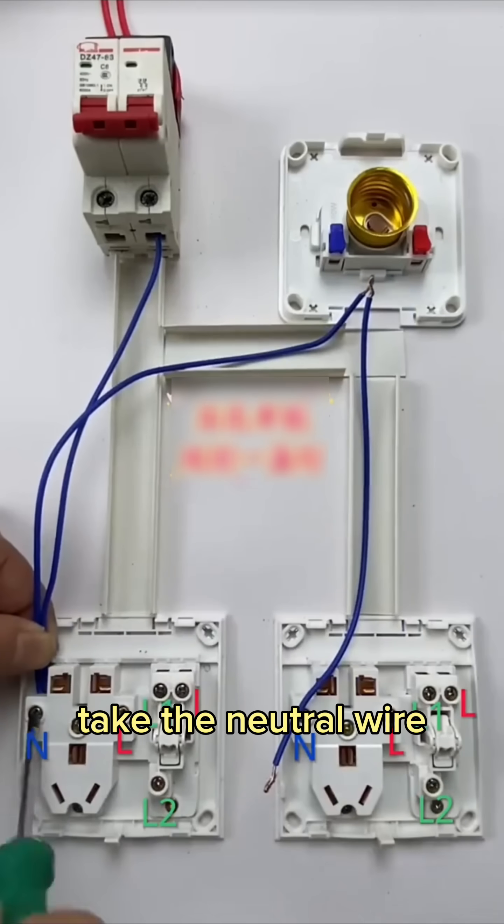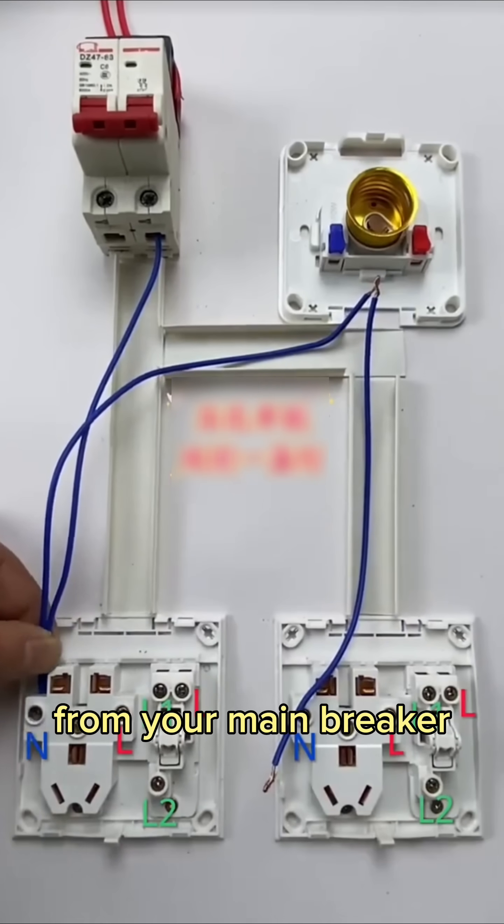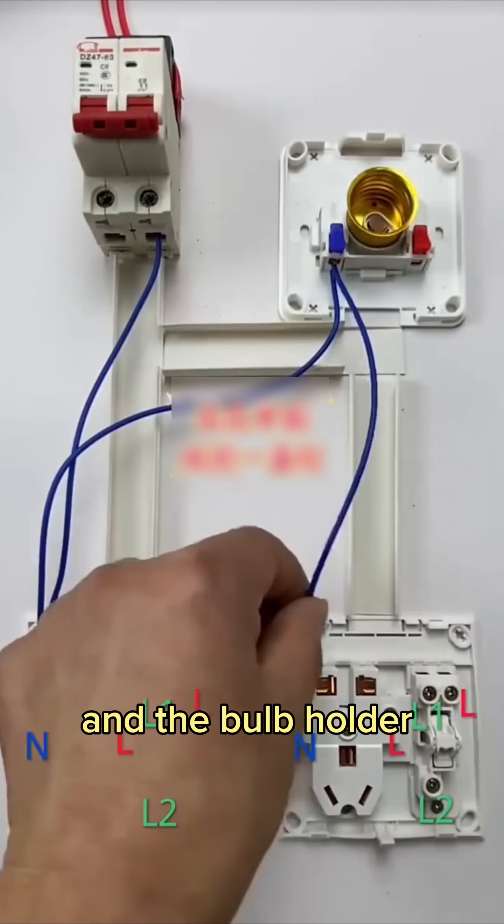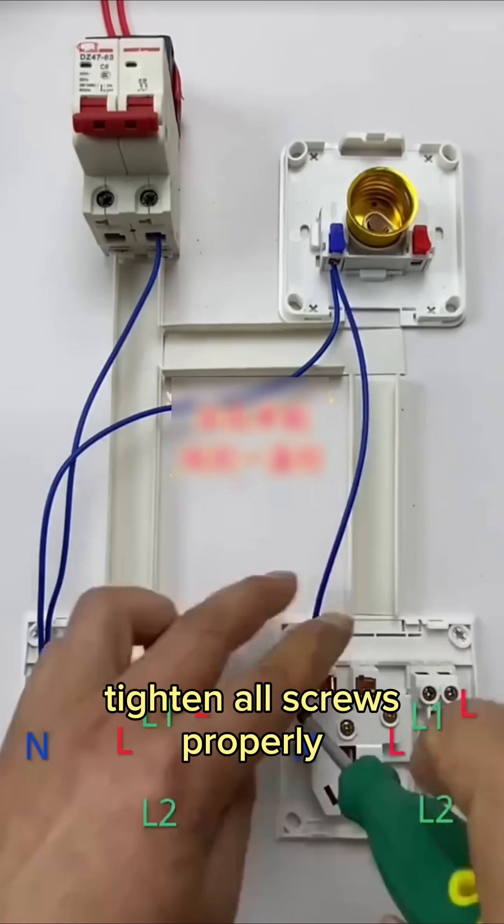First, take the neutral wire from your main breaker and connect it to the end points of both sockets and the bulb holder. Tighten all screws properly.